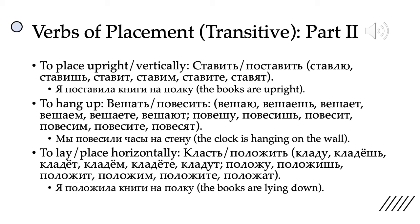We also have to hang up or to place by hanging — the transitive form of to hang — which is вешать and повесить. Вешать is straightforward: вешаю, вешаешь, вешает, вешаем, вешаете, вешают. Повесить becomes повешу, повесишь, повесит, повесим, повесите, повесят — note the consonant mutation in the я form. For example: мы повесили часы на стену — we hung up the clock on the wall. Note the stress shift in стена: like many bisyllabic feminine nouns, the stress shifts from the end to the stem in the accusative singular.